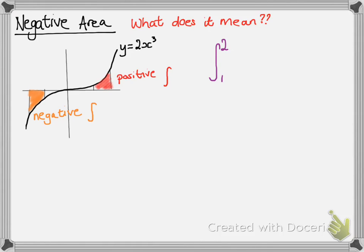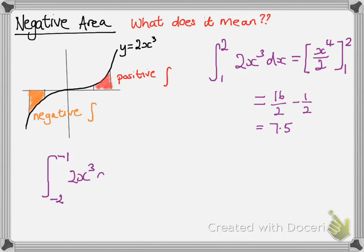So, you can see that if we integrated between 1 and 2, like this, we would get our positive answer of 7.5. But if we integrate between negative 1 and negative 2, we come out with a negative number, negative 7.5.